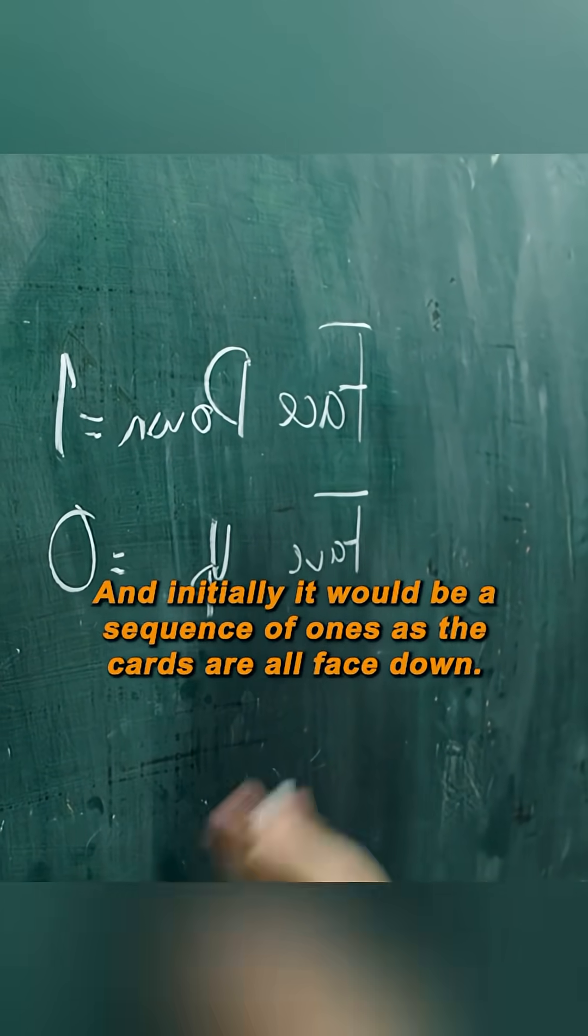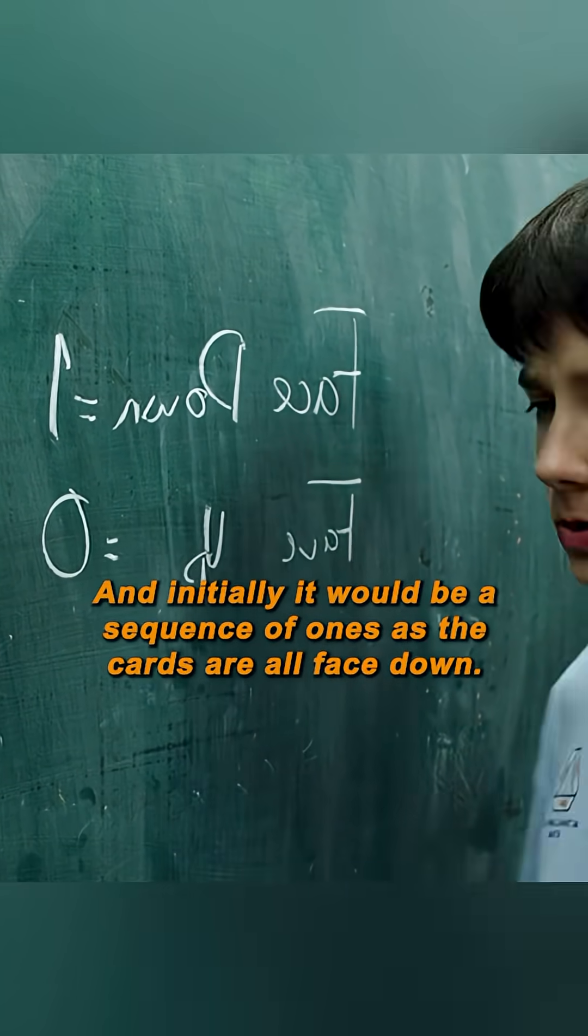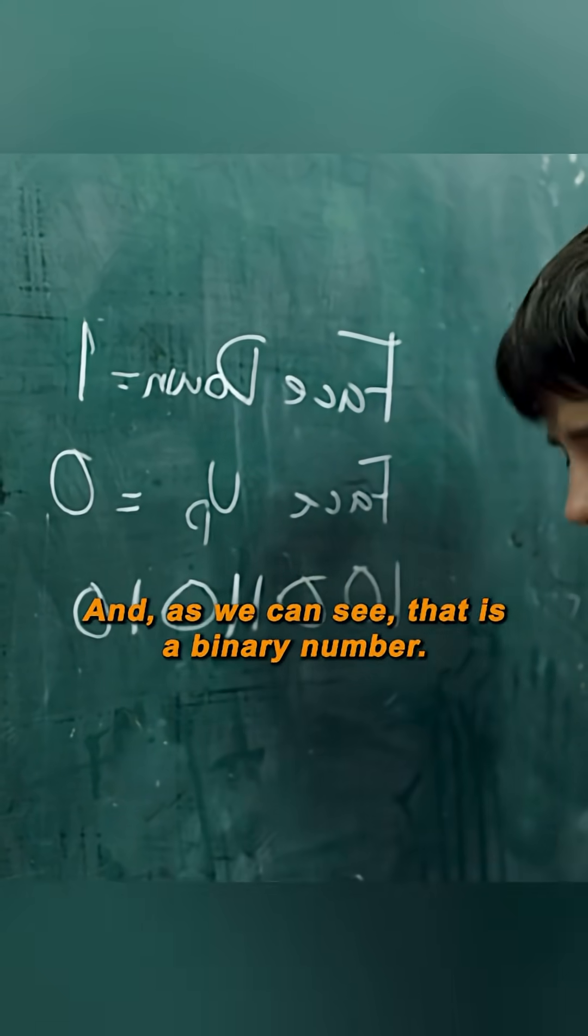And initially it would be a sequence of 1s, because the cards are all face down. As we can see, that is a binary number.